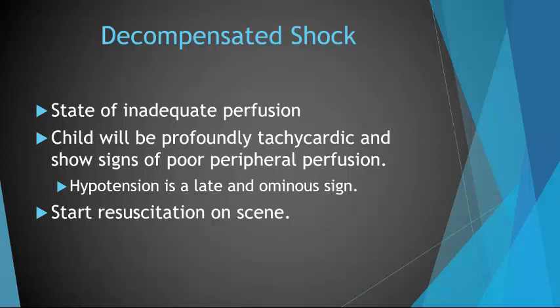Once we get to decompensated shock, all mechanisms have failed to provide adequate perfusion. This includes hypotension, which would be relative to the age of the patient. The child will be profoundly tachycardic and show signs of poor peripheral perfusion, and they may have an altered appearance reflecting inadequate perfusion of the brain. Because children typically have strong cardiovascular systems, they compensate more efficiently than adults, so hypotension is a late and ominous sign urging you to pay close attention and provide urgent intervention.